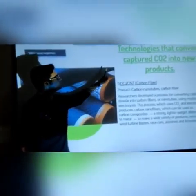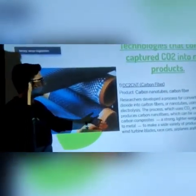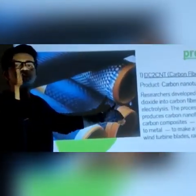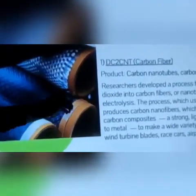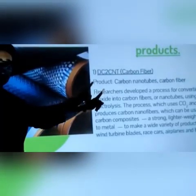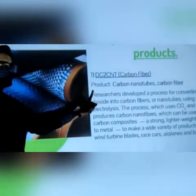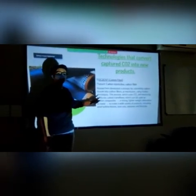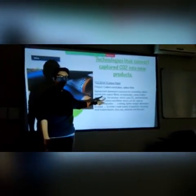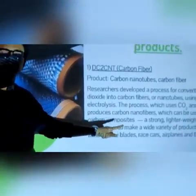Technologies that convert captured CO2 into new products: here we have offered some alternatives which farmers can follow and earn profits. The first alternative is carbon fiber. Researchers have developed a process to convert carbon dioxide into carbon fibers or nano-tubes using molten electrolysis. Carbon fiber is a strong, lightweight alternative used to make a wide variety of products like wind turbine blades, race cars, airplanes, bicycles, etc.